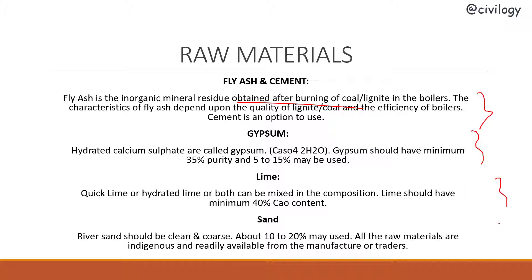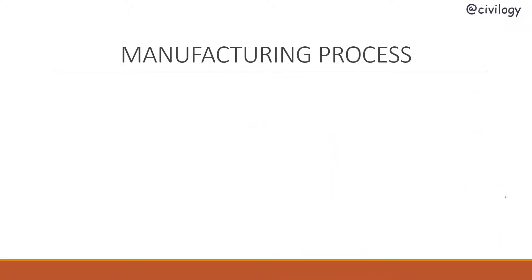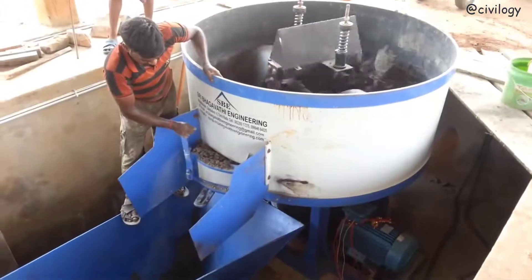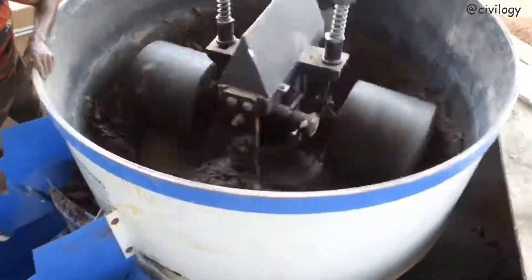In the manufacturing process: fly ash 70%, lime 10%, gypsum 5%, and sand 15% are manually fed into a pan mixer where water is added in the required proportion for homogeneous mixing. In place of fly ash only, you can use both fly ash and cement — cement will be 10% and fly ash the remaining 60%. If you use cement as a raw material, it is called fly ash cement bricks. The proportion of raw materials may vary depending on quality.